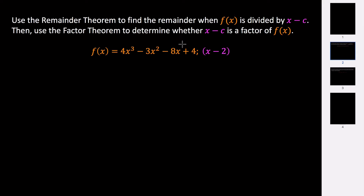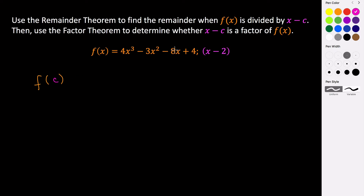For this example we're going to use the remainder theorem to find the remainder of our function when it's divided by x minus c, and then we're going to use the factor theorem to determine whether x minus c is a factor of f of x. What the remainder theorem says is if you evaluate some function at some value of c, then that function once it's evaluated is just going to equal r, which is the remainder. So when you evaluate f at some value of c, whatever you get as a result, r is just the remainder of if you were to take your function and divide by that factor.